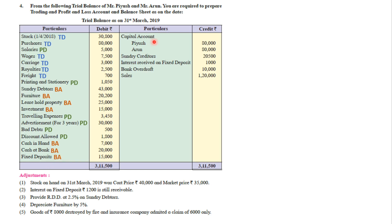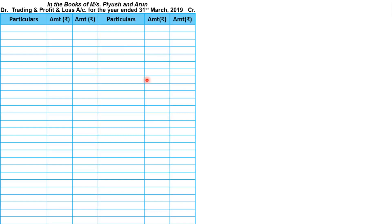Now let's go to the credit side. Capital account will be transferred to balance sheet liability. Sundry creditors: balance sheet liability. Interest received on fixed deposit is an income, so it will be transferred to profit and loss account credit side. Bank overdraft: balance sheet liability. Sales: trading credit.